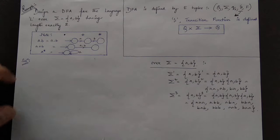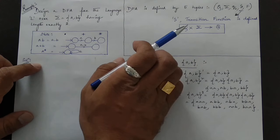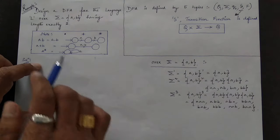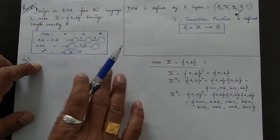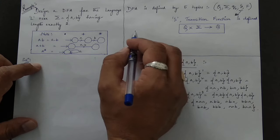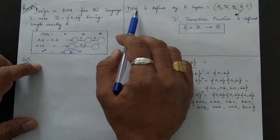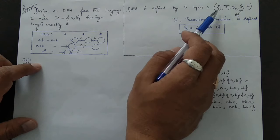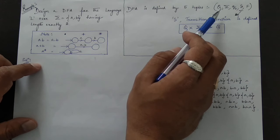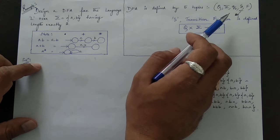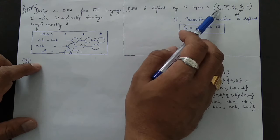In the previous lecture I already mentioned the concept of the transition function. A DFA is defined by five tuples: capital Q, Sigma, q-naught, delta, and F. Capital Q stands for a finite number of states, since all inputs move from one state to another until reaching the final state, which is the accepting state.